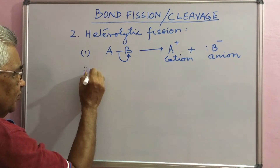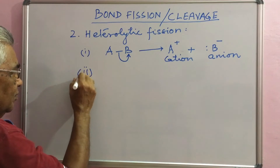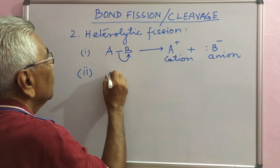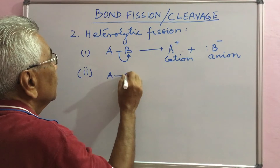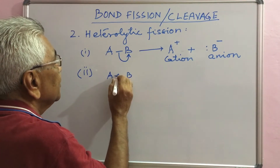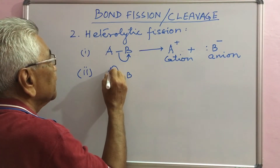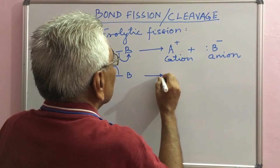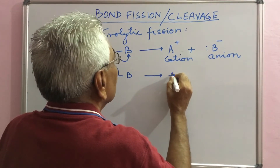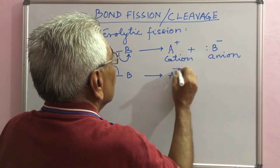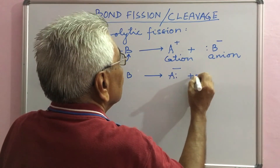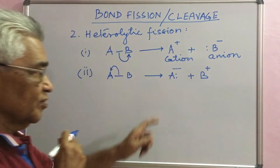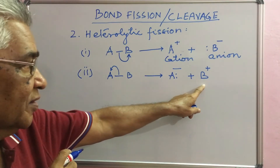The other possibility is that AB breaks in such a way that the two electrons are retained by A, and B goes without electrons. This time A becomes the anion and B becomes the cation.